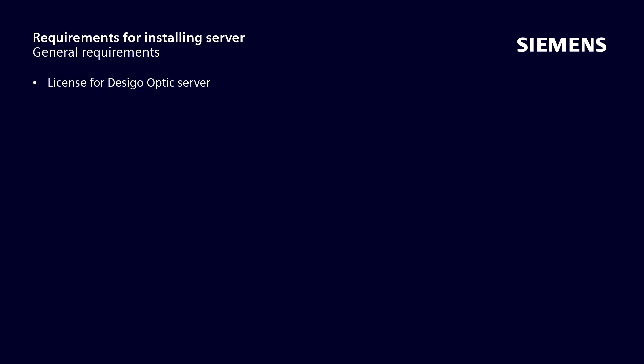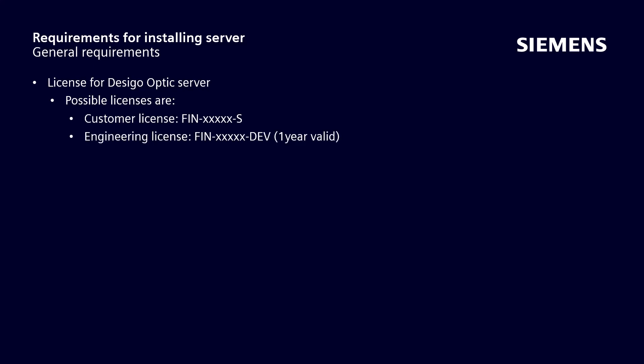For the installation of Decego Optic Server, a license is required. The possible licenses are: a customer license shown here, an engineering license shown here which is valid for one year, or Siemens provides a training license valid for one month, free of charge, which can be downloaded from a share folder every month.